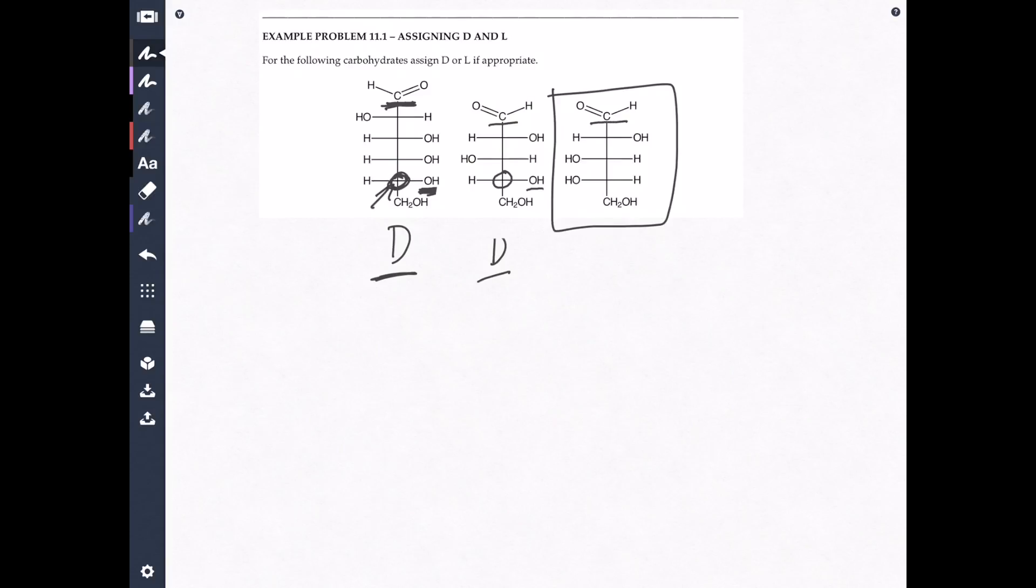Okay. You're back. Go ahead and underline the carbonyl. There's the carbonyl. Find the chiral carbon that's furthest away from it. It's right there. Find the OH. Is it on the left side of the molecule or the right side of the molecule? It's on the left. So it's L.